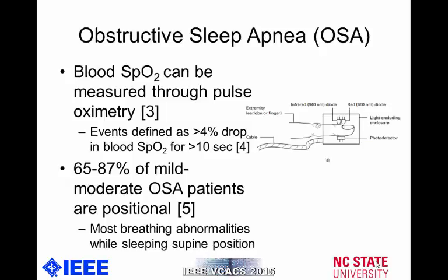To actually observe obstructive sleep apnea, blood oxygen levels are a useful tool. These oxygen levels, which generally correspond with how much oxygen the patient is getting, can be measured through pulse oximetry. Pulse oximetry uses two different wavelengths of light to determine the percentage of your hemoglobin that contains oxygen. Medicare describes an obstructive sleep apnea event as a greater than 4% drop in blood SpO2 for a time frame of 10 seconds or more.